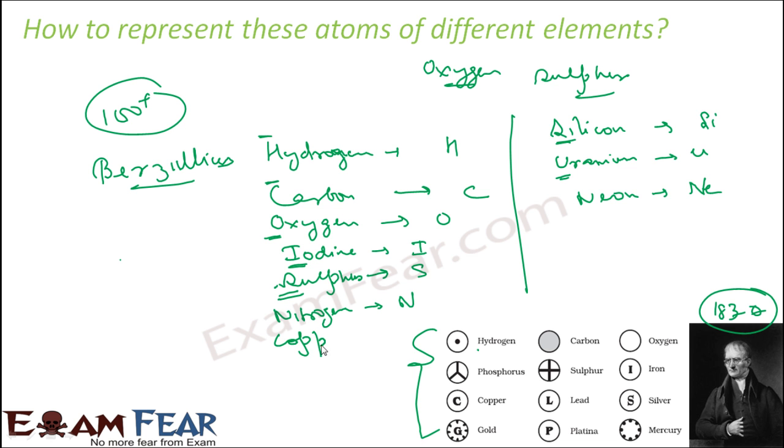Copper. So Copper, it can be C, but C is already given to Carbon. So C cannot be given. So it was Cu. Why Cu? Cuprum. Cuprum or Cupras is the Latin name for Copper. So from this word Cuprum or Cupras, this symbol Cu was derived. Similarly, Gold also, if you see, Gold was given Au based on the Latin name Aurum.